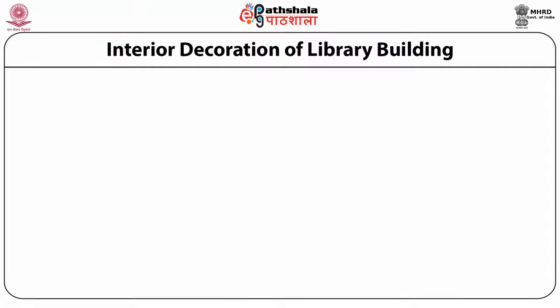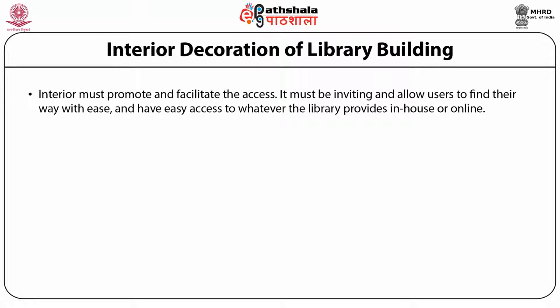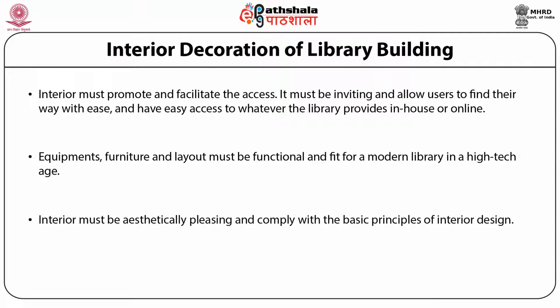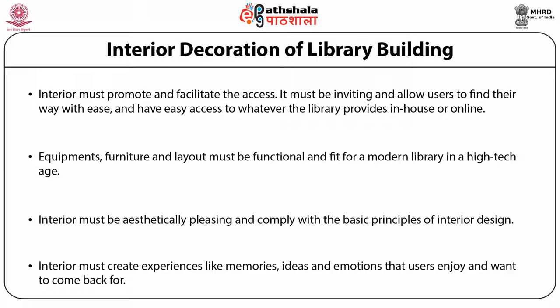Now, have a look on the interior decoration of the library building. Interior must promote and facilitate access. It must be inviting and allow users to find their way with ease and have easy access to whatever the library provides, in-house or online. Equipment, furniture, and layout must be functional and fit for a modern library in a high-tech context. Interior must be aesthetically pleasing and comply with the basic principles of interior design. Interior must also create experiences — like memories, ideas, and emotions — that users enjoy and want to come back for.